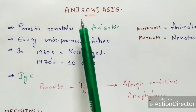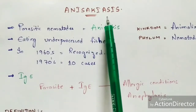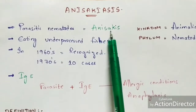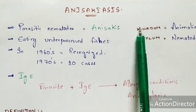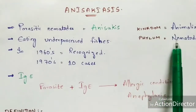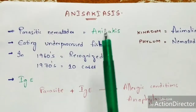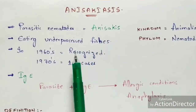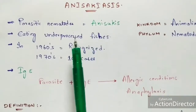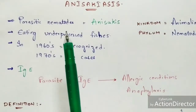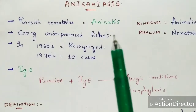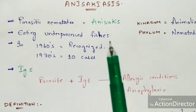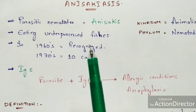Anisakiasis is a parasitic disease which is mainly caused by parasitic nematodes called Anisakis. This Anisakis is a parasitic nematode which belongs to the kingdom Animalia and the phylum Nematoda. This anisakiasis disease is caused by eating under-processed fish, that is improperly cooked fish. The disease has been recognized since the 1960s, though the name of the discovering scientist is not properly known.